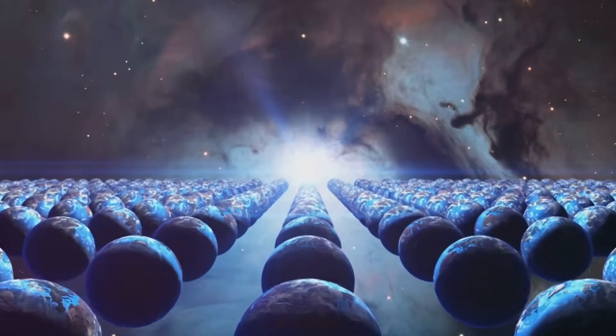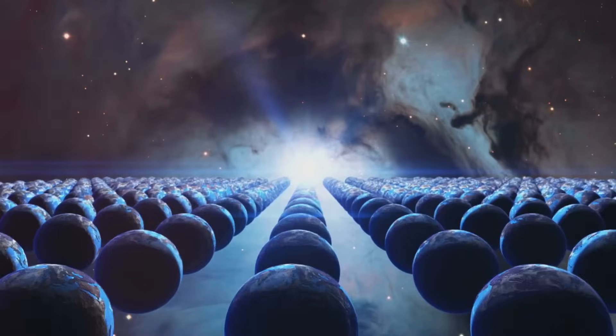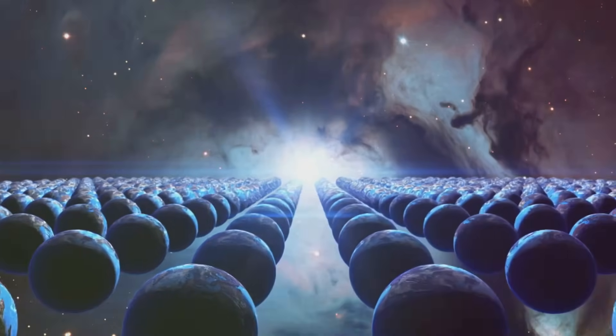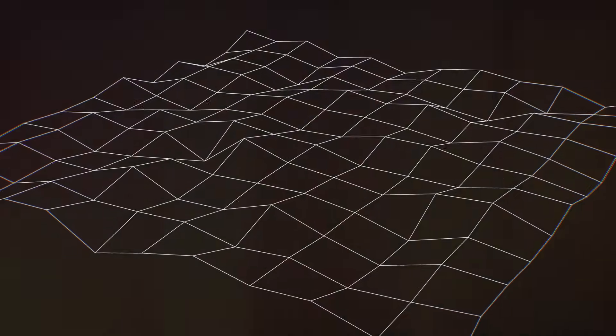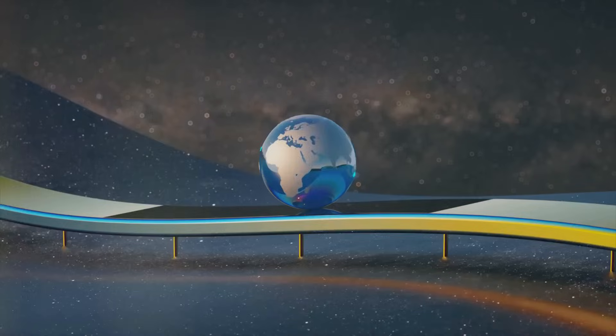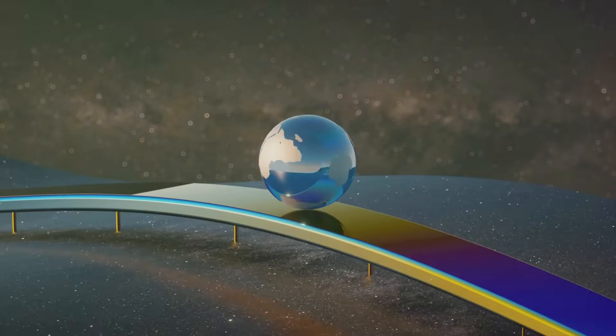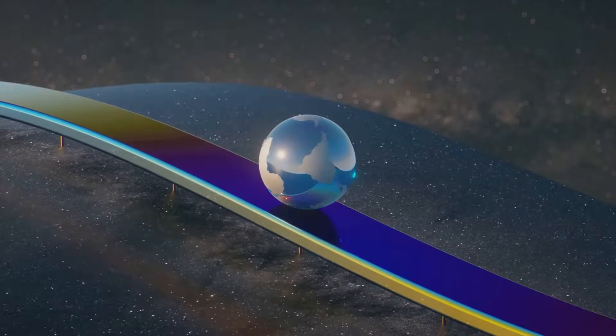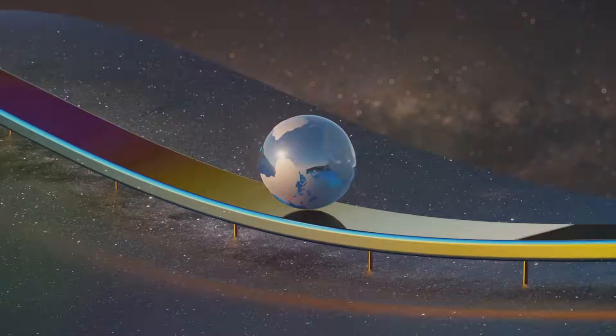Our journey through dimensions begins quite simply with the dot, the point or zero dimensions, a singular locus in space. Extend that point into a line and you have the first dimension representing length. Stretch the line into a plane and width reveals the second dimension. Add depth to create a form and welcome to the third dimension, our everyday reality encompassing length, width and height.